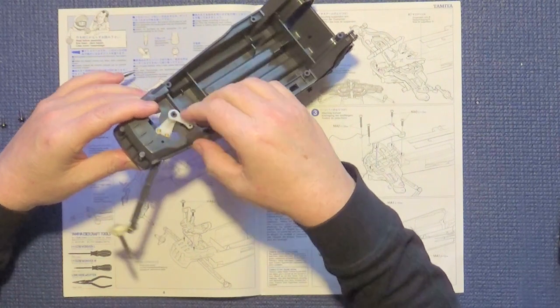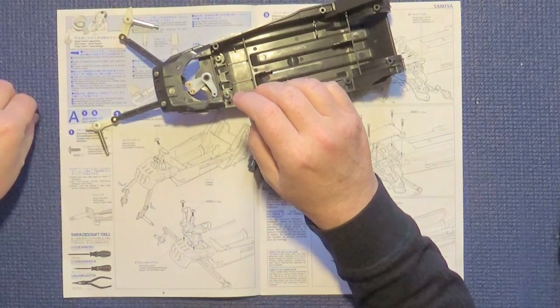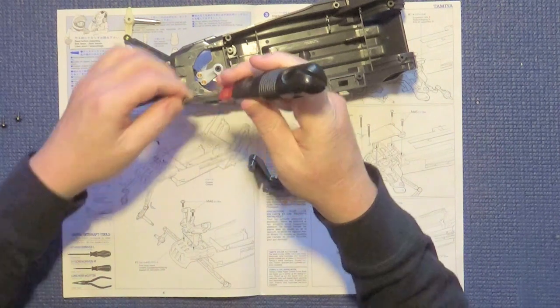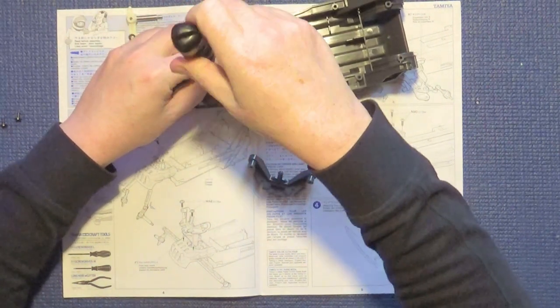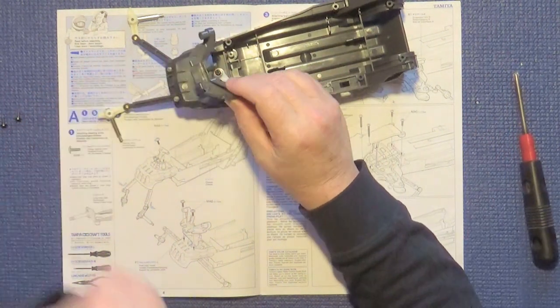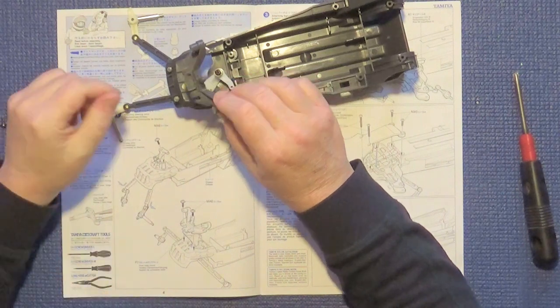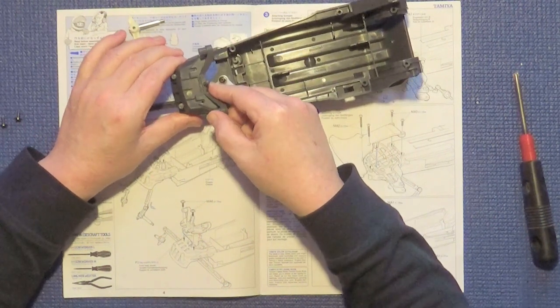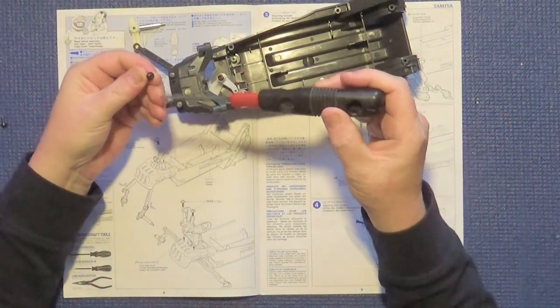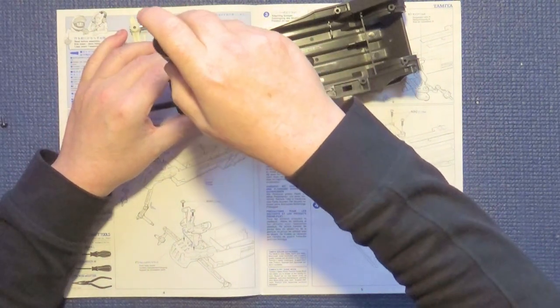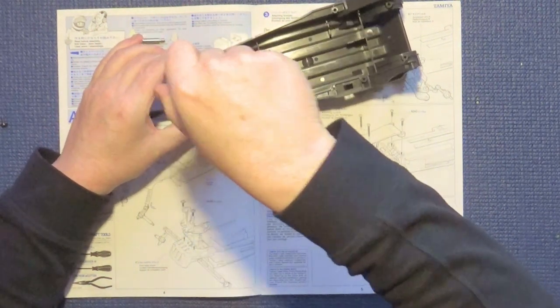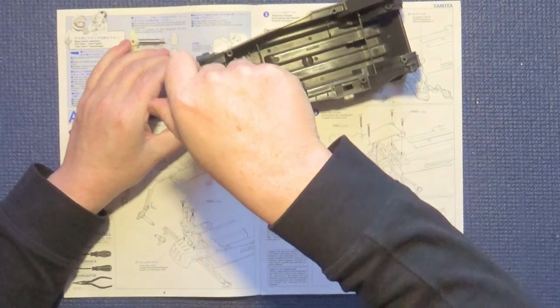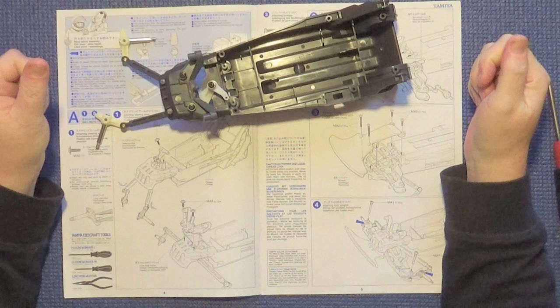Then we've got one of these flange tapping screws as Tamiya are calling it, and that will go in there like that. We've also then got the front shock mount and body mount which slides in underneath like so, and yet again another two of these flanged self-tappers. Once you tighten them up you can then move on to step two.